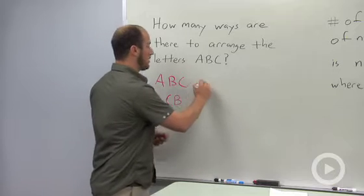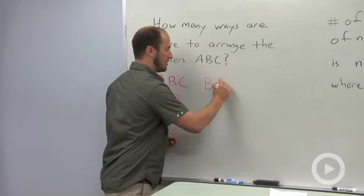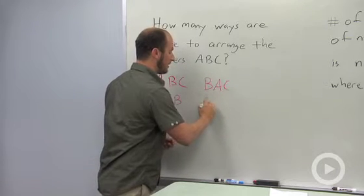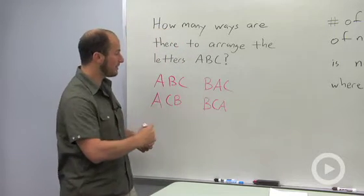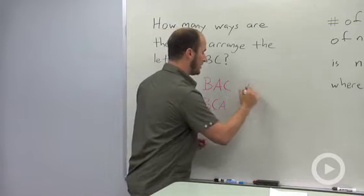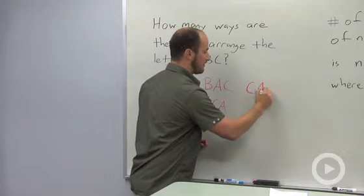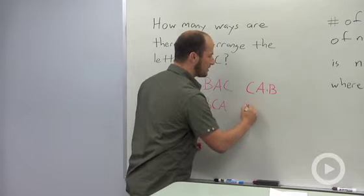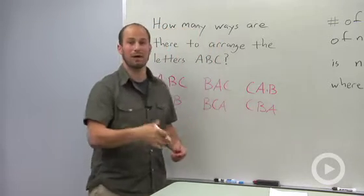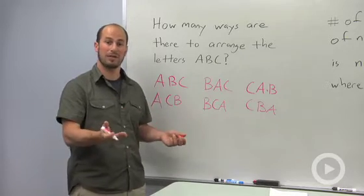Now we can go to B first. We could say BAC, switch those last two letters and have BCA. And lastly we could have C first, and then we could have AB, or C and then BA. We're not talking about words per se, we're just talking about the total number of arrangements.